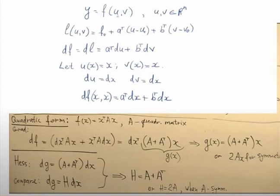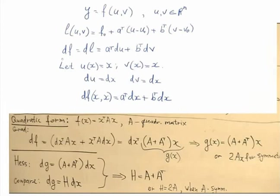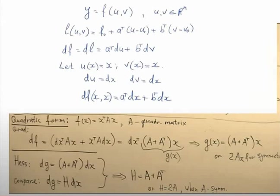If I have a function of two vector variables, the linear approximation takes the separable form: some vector aᵀ multiplied by the increment of u, plus some other vector bᵀ multiplied by the increment of v. The differential is aᵀ·du + bᵀ·dv. Now I let u depend on x, setting u(x) = x and v(x) = x, so du = dx and dv = dx. Substituting back, I get aᵀ·dx + bᵀ·dx — meaning I can freeze the function in one variable, let only x change to get the first term, then do the opposite to get the second term.